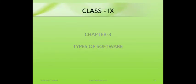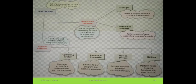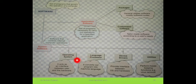Today students we will discuss about Chapter 3: Types of Software. In the previous video we studied about system software and its types — that is operating system, language processor, device drivers, and utilities. Now today we will study about application software.